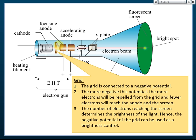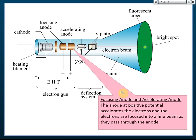In front of the cathode is a ring called the control grid. The grid is connected to a negative potential, which repels electrons. This controls the amount of electrons that can pass through it, and therefore controls the brightness of the spot on the screen. More electrons passing through produces a brighter spot; fewer electrons produces a dimmer spot. Hence, the negative potential of the grid is used as a brightness control.